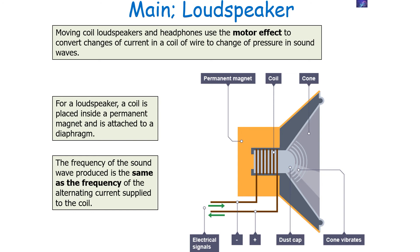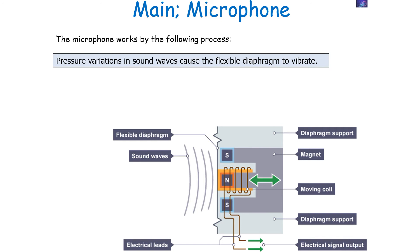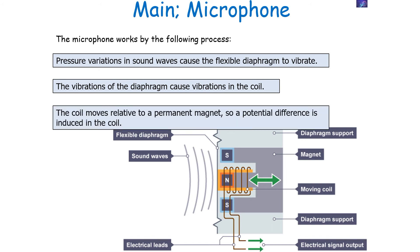By contrast, inside a microphone you have a diaphragm, a moving coil, and a permanent magnet — a very similar setup to a loudspeaker. Pressure variations in sound waves cause the diaphragm to vibrate, and the vibrations of the diaphragm cause the coil to move backwards and forwards. The coil moves relative to the permanent magnet, and because the coil is moving through the permanent magnet's magnetic field, this induces a potential difference via the generator effect.